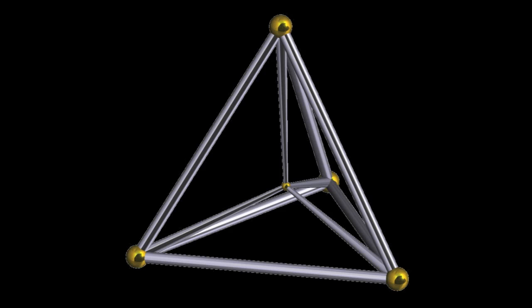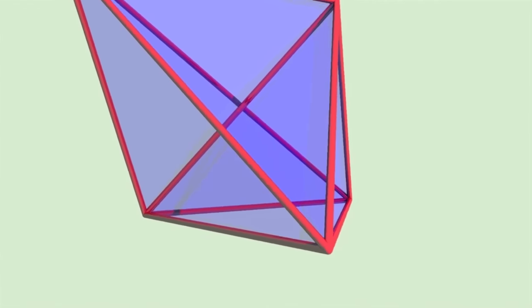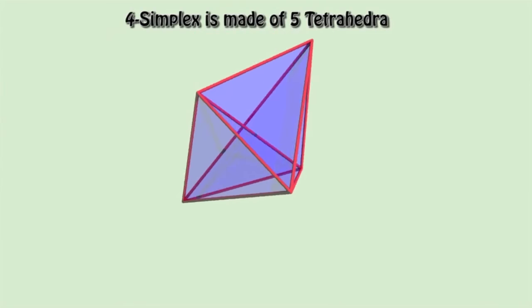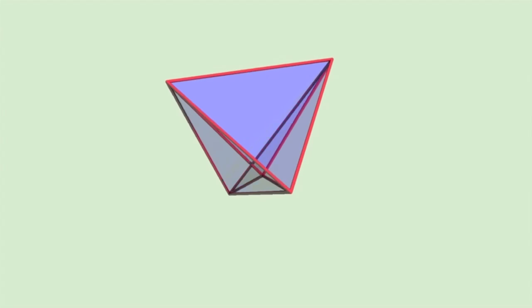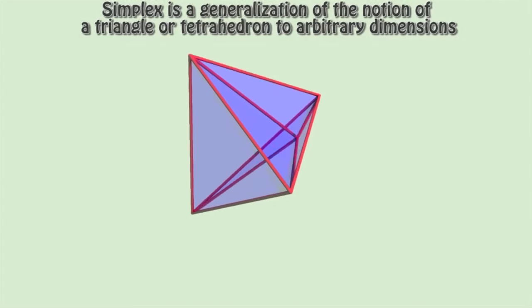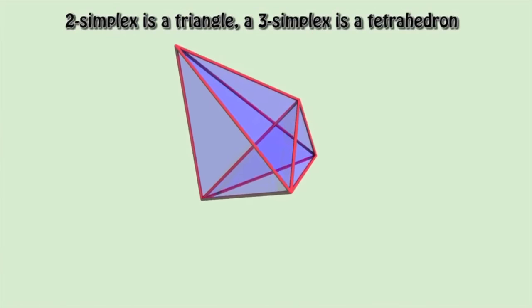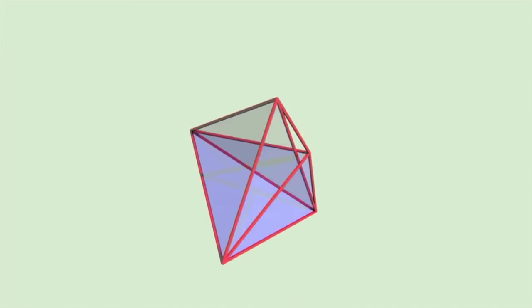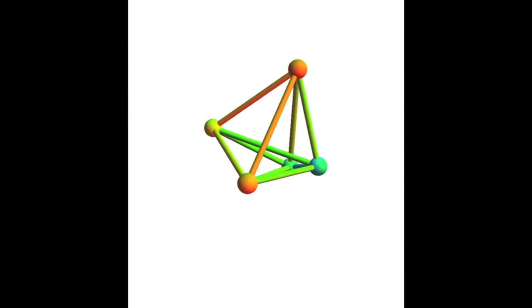The counterpart of the tetrahedron in three dimensions, the four-simplex or hyper-tetrahedron, is, as its title implies, the simplest form of regular polyhedra possible in any given dimension. In two dimensions, this is the triangle of three vertex corners and three edge lines. In three dimensions, the tetrahedron of four triangles. In four dimensions, the four-simplex of four tetrahedrons combined into one.